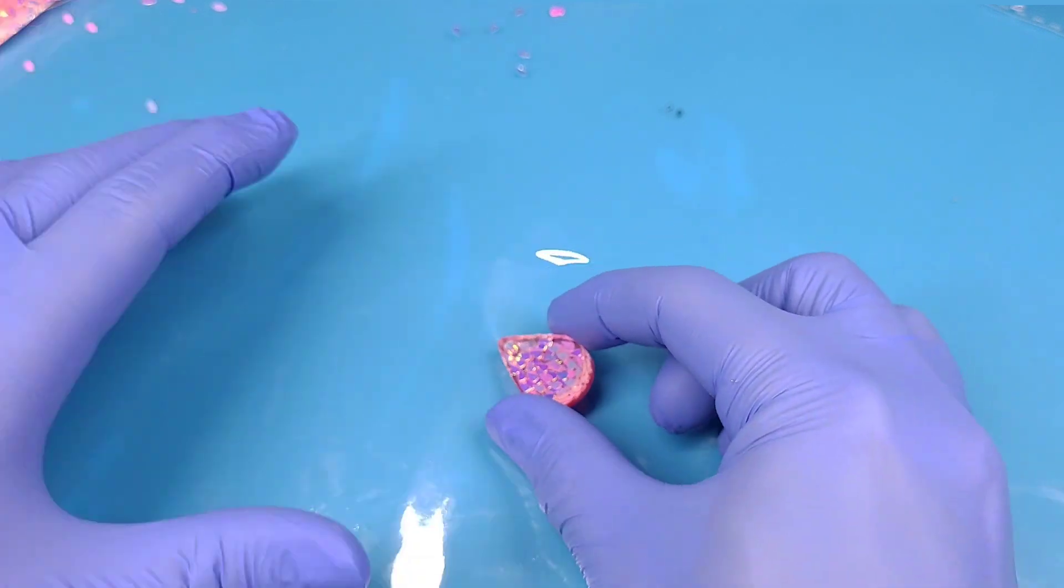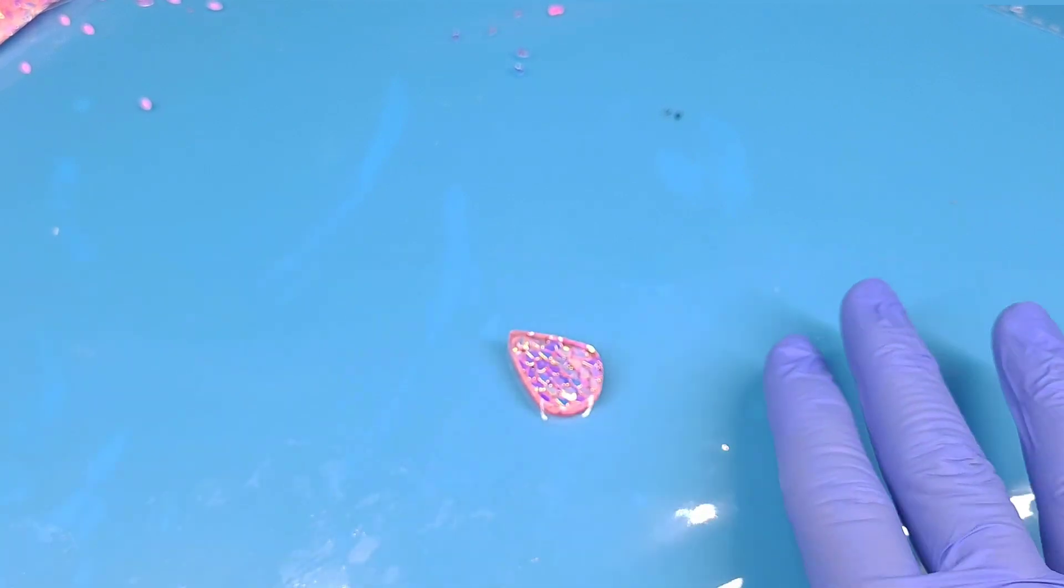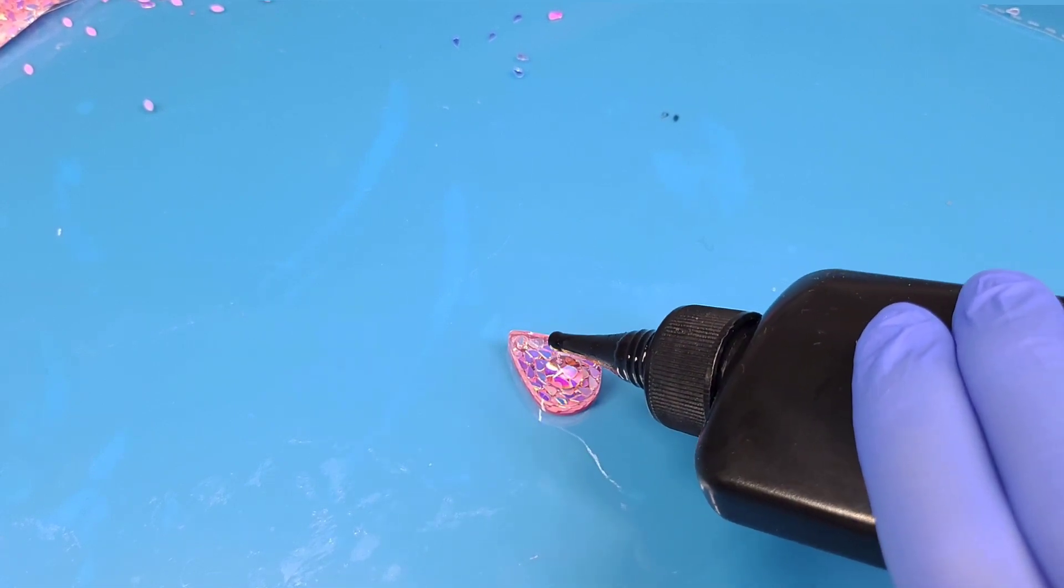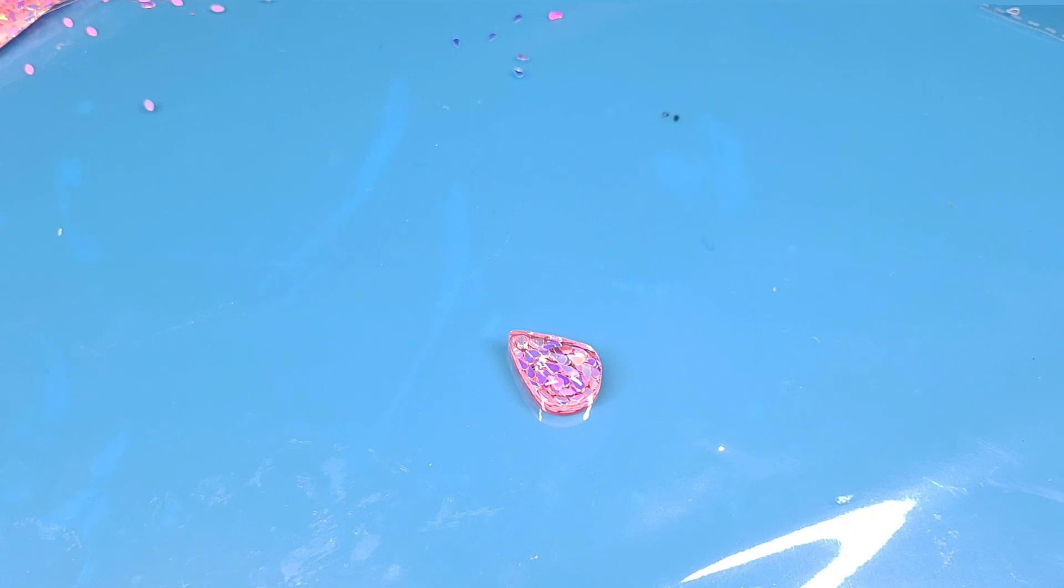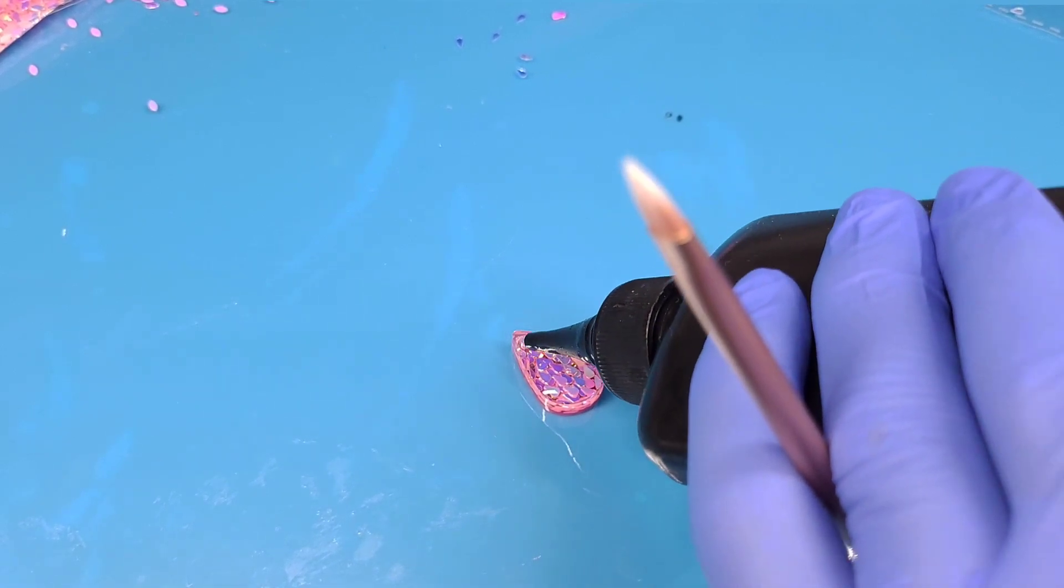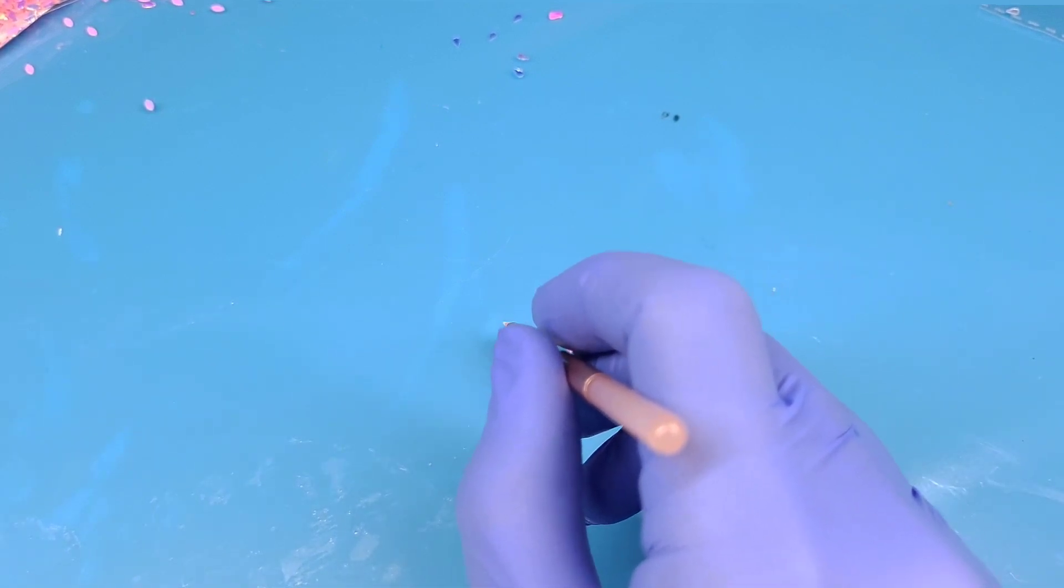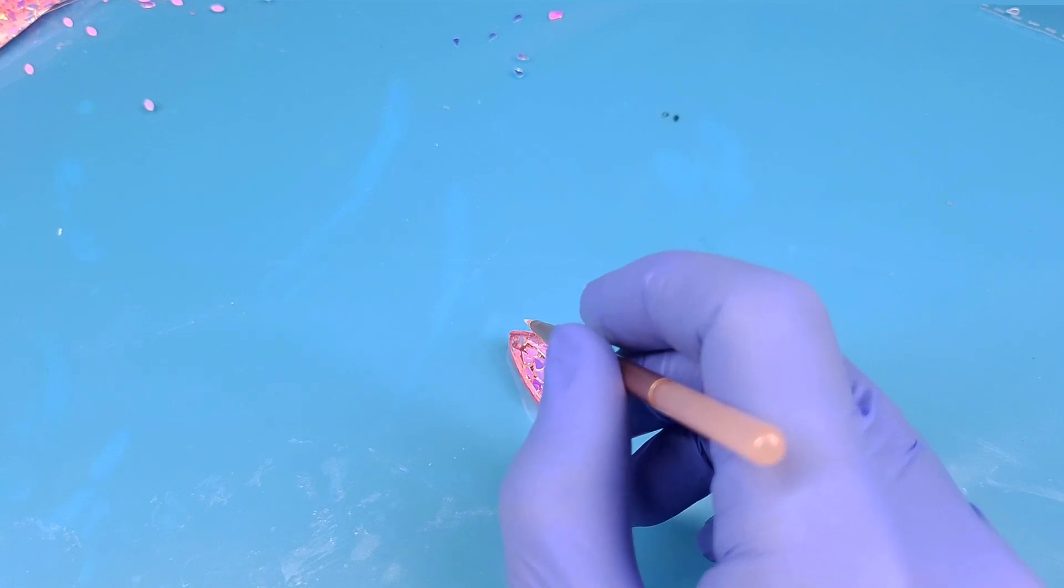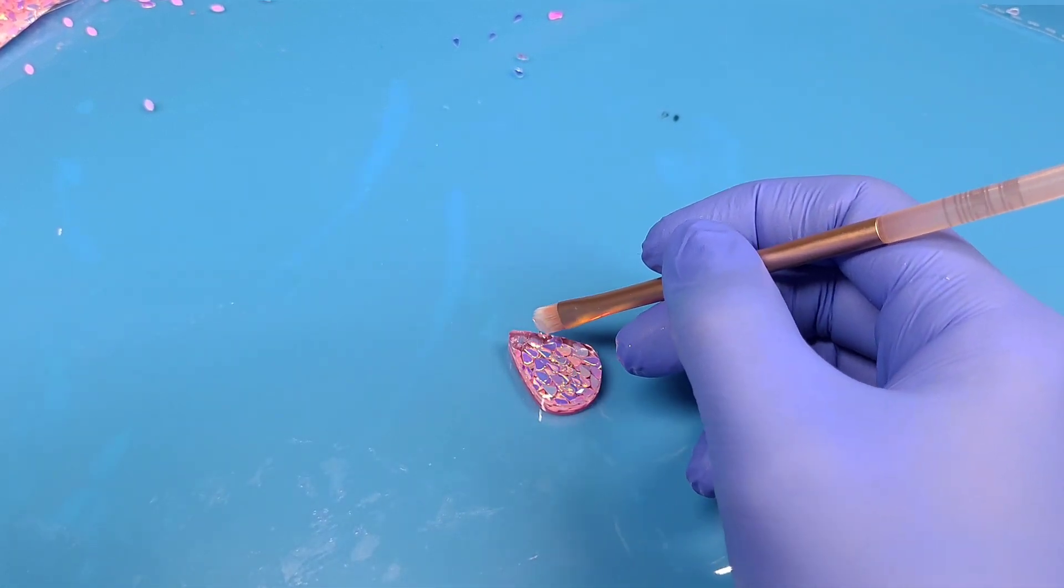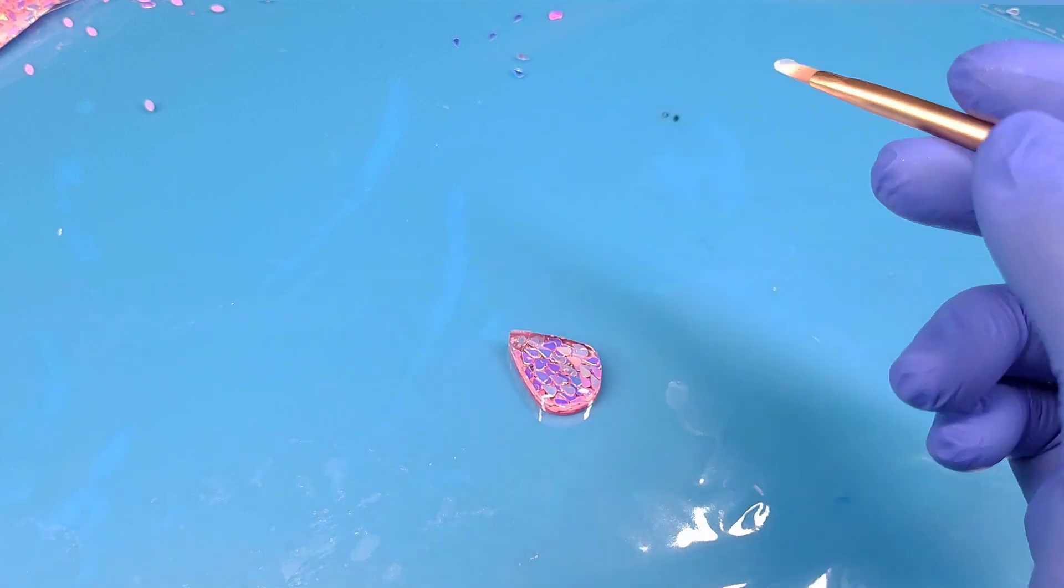You can start now the sanding and finish it with a layer of resin so that it looks a little bit bulbous. One thing you cannot see here is that I sanded the edges and didn't touch it with the resin again. I really like the look, but you can do as you want.